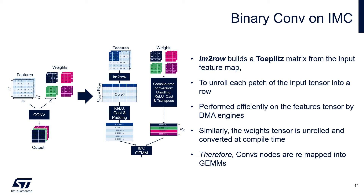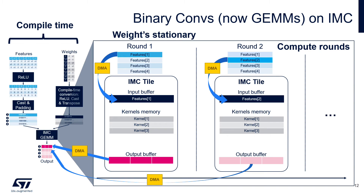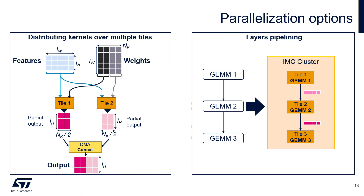One key operation the compiler performs is convolution lowering. The kernels and activation tensors are converted using an image-to-row transform into a Toeplitz matrix — both for activations and for weights. The convolution is then lowered to a set of generalized matrix multiplications. These operations are executed in the IMC with weights stationary in memory, while features are loaded in and out via DMA after computation. There are two ways to scale further: decompose weights into sub-tensors and parallelize within the tile memory, or use tiles in a pipeline fashion.